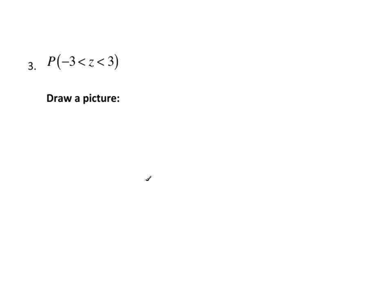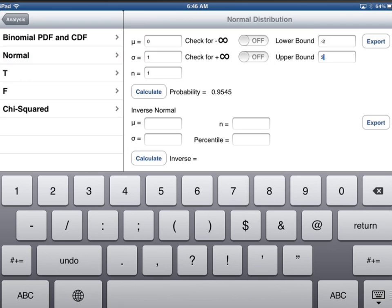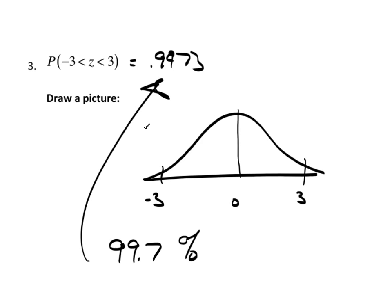And the last one — same thing as you'd expect. Draw another picture: the mean is 0, I'm coming out here to negative 3, and out to positive 3. We know from the empirical rule this should be approximately all — we actually say 99.7%, but approximately all. So if I go back to TC Stats and change the lower bound to negative 3 and the upper bound to 3 and calculate — there's 99.7%. It's actually 99.73% rounded to four places. So there's your 99.7% that the empirical rule tells us.